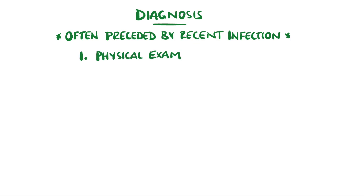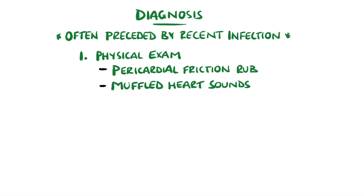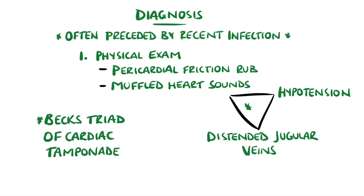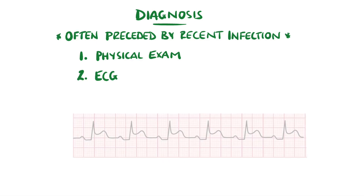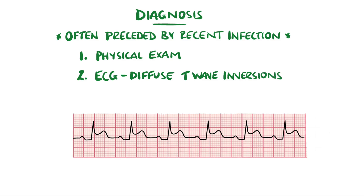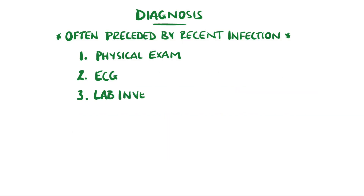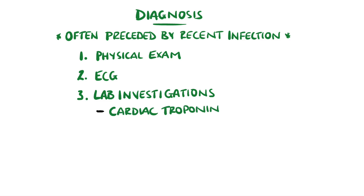Physical exam findings can include a pericardial friction rub that improves by sitting forward. Muffled heart sounds are possible if more fluid is present, and this is one of Beck's triad for cardiac tamponade, alongside hypotension and distended jugular veins. ECG findings are typically T-wave inversions or saddle-shaped ST segments diffusely across the leads, and PR depression may also be seen. Lab investigations involve cardiac biomarkers such as troponin to suggest myocardial involvement, and elevated inflammatory markers like CRP and white blood cells.